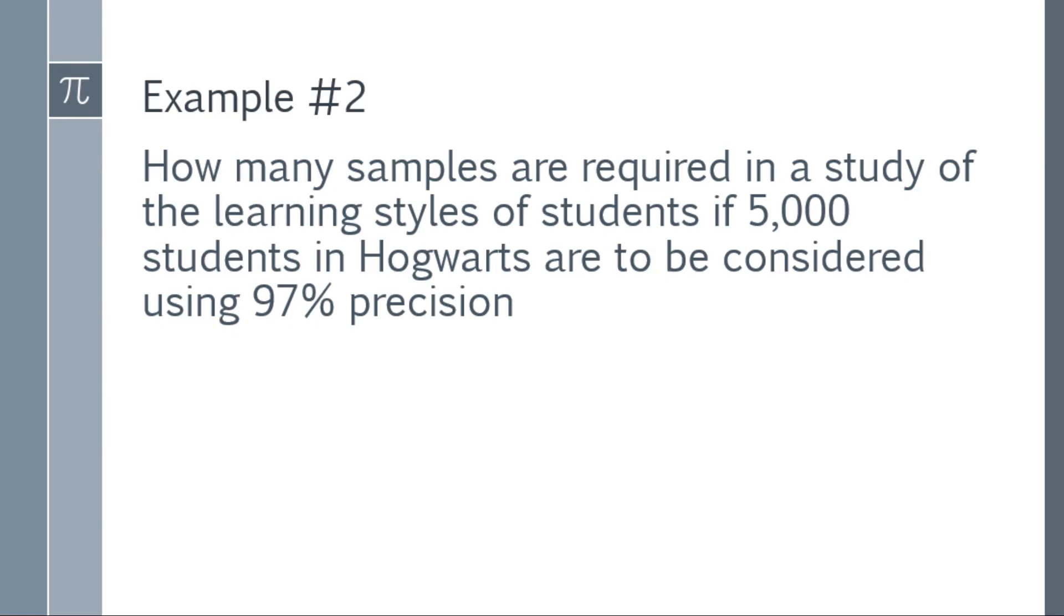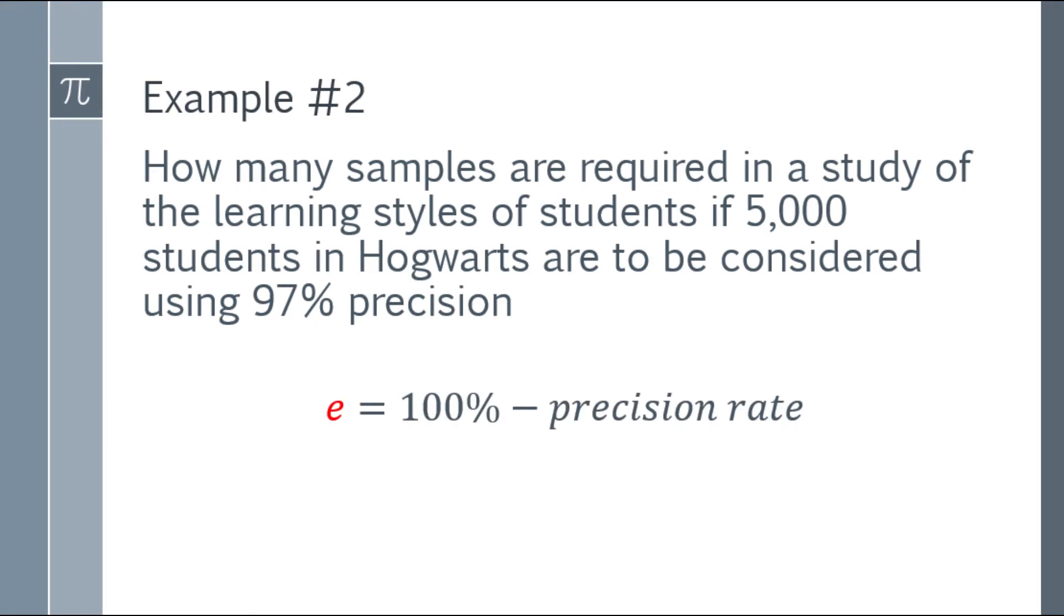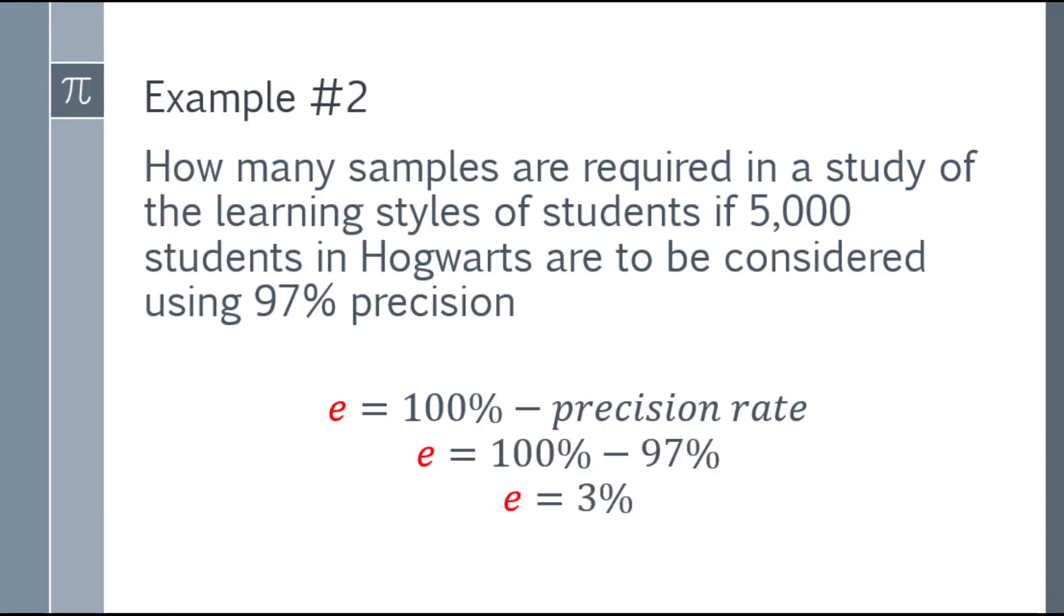So what is the margin of error here? Now to get the margin of error, the margin of error is 100% minus the precision rate. The precision rate can also be called confidence level. So in other problems, sometimes it's precision rate or sometimes confidence level. So to get the margin of error, 100% minus the precision rate or confidence level. So in this problem, we have 100% minus 97%, and the margin of error will be 3%.